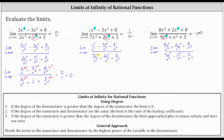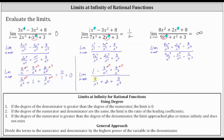For the second limit, we divided everything by x to the seventh. In the numerator, x to the seventh divided by itself gives 1; minus 3x squared divided by x to the seventh gives 3 divided by x to the fifth; plus 8 divided by x to the seventh doesn't simplify. In the denominator, 7x cubed divided by x to the seventh gives 7 divided by x to the fourth; 2x to the seventh divided by x to the seventh gives 2; and 3 divided by x to the seventh doesn't simplify. As x approaches infinity, 3/x⁵, 8/x⁷, 7/x⁴, and 3/x⁷ all approach 0, while 2 is unaffected. Simplifying, we get 1 divided by 2, which equals one half — the same limit found above.